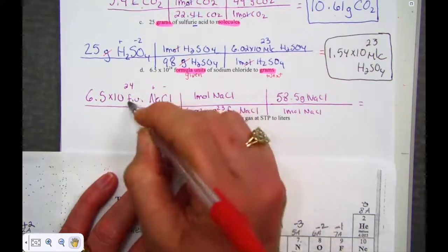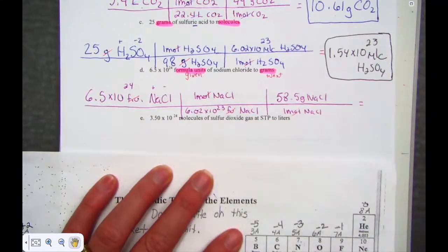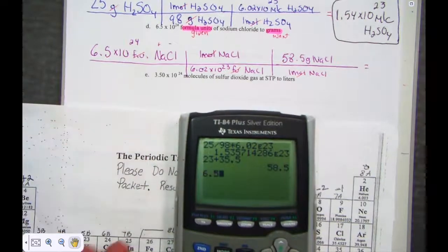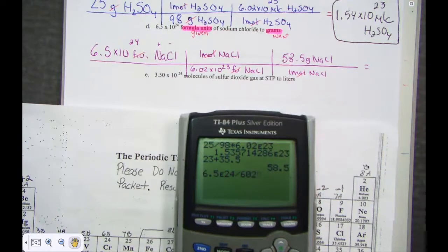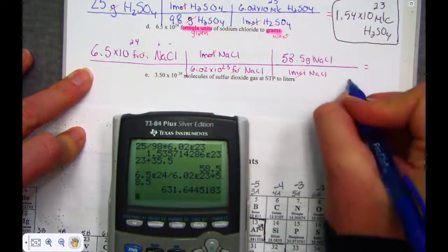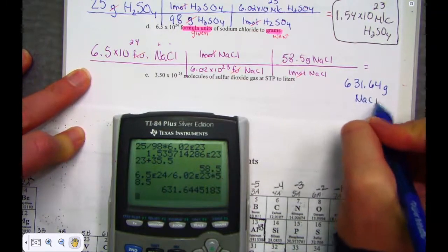Step 1 canceled formula units using Avogadro. Step 2 canceled our mole unit and arrived at grams. Now let's solve: 6.5 × 10²⁴ divided by Avogadro 6.02 × 10²³, times the molar mass of 58.5. The calculator answer is 631.64 grams of sodium chloride.